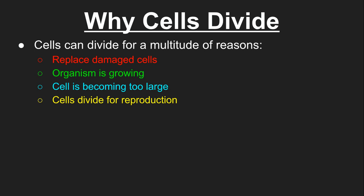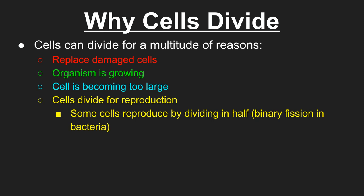The final one for us to talk about on here are that some cells divide for reproduction. This can look different depending on the complexity of the organism. For example, some things like bacteria, they have a very simple method for dividing and then reproducing. They basically just split in half.